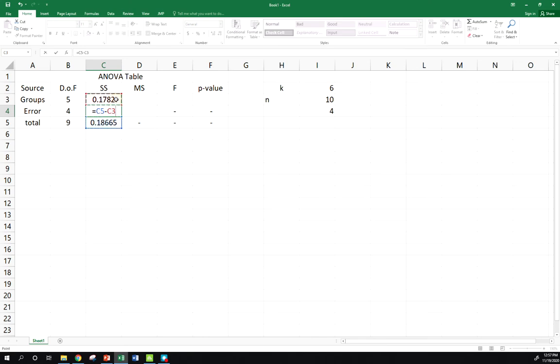Your mean square—we take the sum of squares, divide by degrees of freedom, do that for both. My F test statistic: I take my mean square groups, divide by mean squared error, so I get about, call it 16.87.